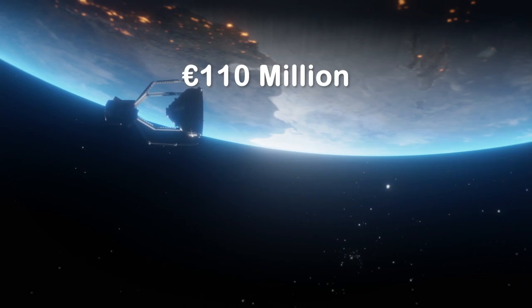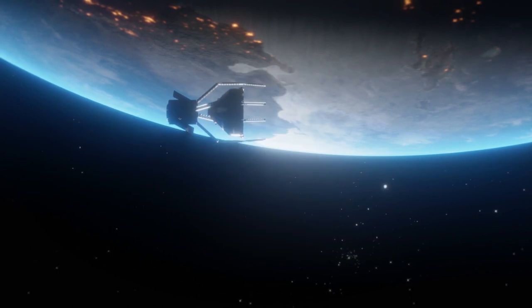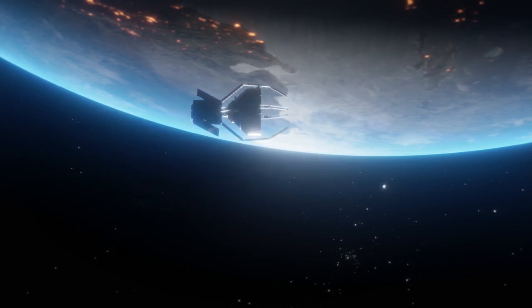For ClearSpace, a 110 million euro contract from ESA, it's making a robot with claws, which will be sent to space to capture a part of one of ESA's dead rockets.